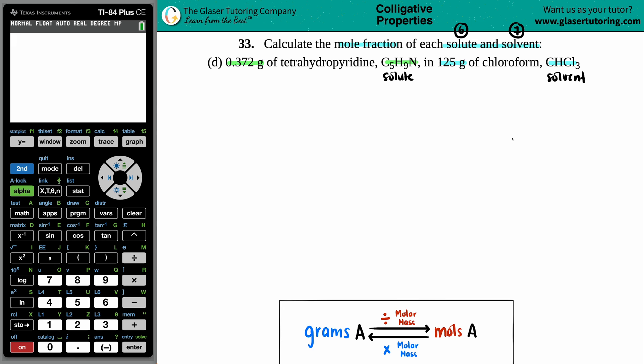What's the mole fraction formula? Mole fraction is represented by capital X. Anytime you see capital X, that's a mole fraction. A mole fraction can only be done for one compound or one substance at a time. Since we need to find the mole fraction for both C5H9N and CHCl3, we'll be doing this formula twice.